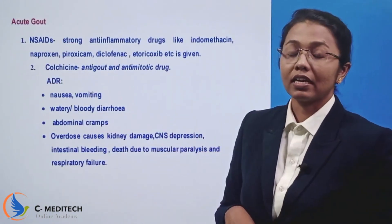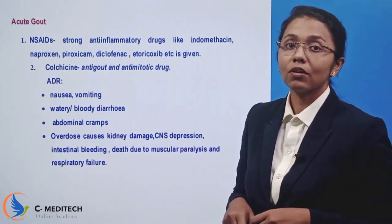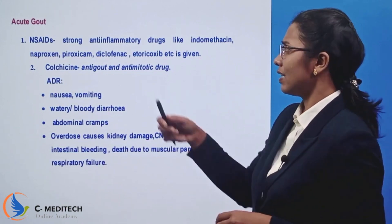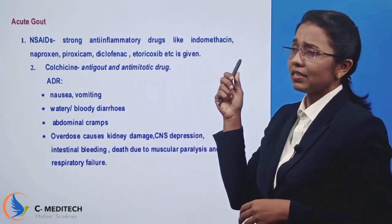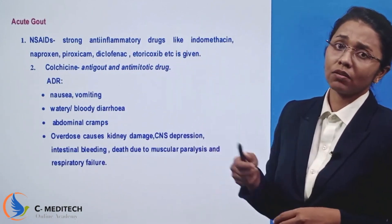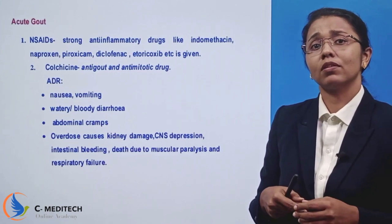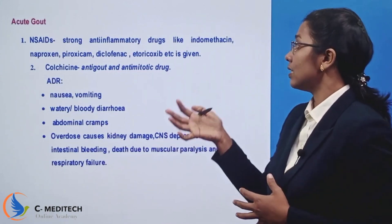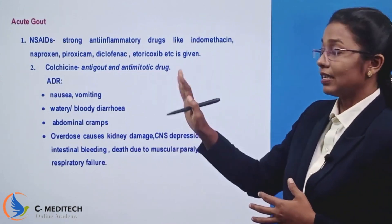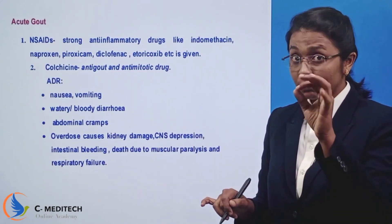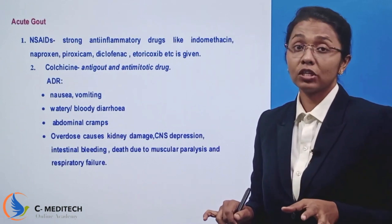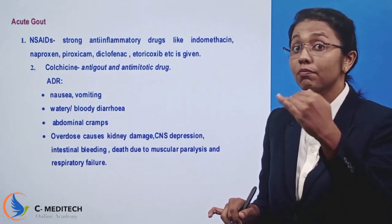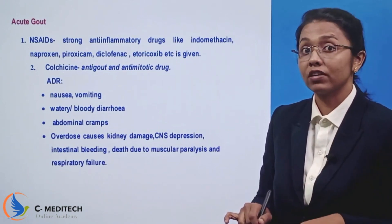For acute gout, the first option is NSAIDs. Note that aspirin is a special case among NSAIDs — aspirin actually has a hyperuricemia effect, so it should be avoided in gout.